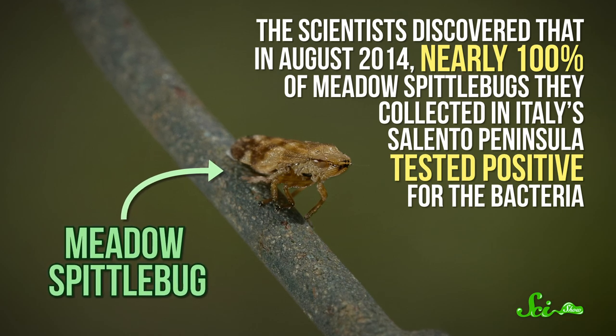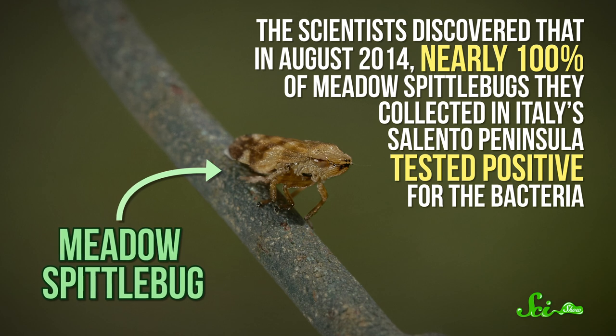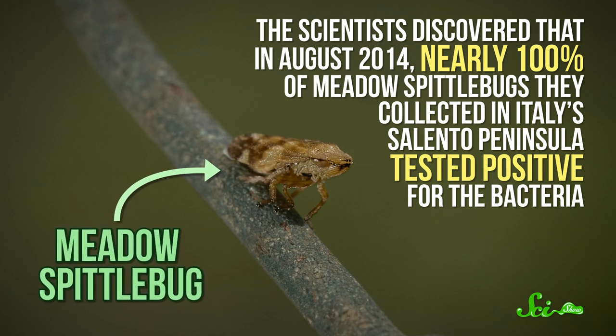The scientists discovered that in August 2014, nearly 100% of meadow spittlebugs they collected in Italy's Salento Peninsula tested positive for the bacteria. Researchers are also testing other types of prevention and treatment techniques, including chemical sprays that help slow the spread of the disease.